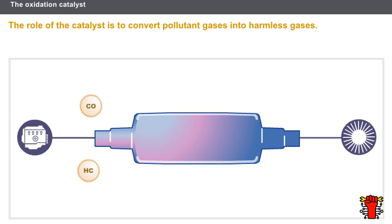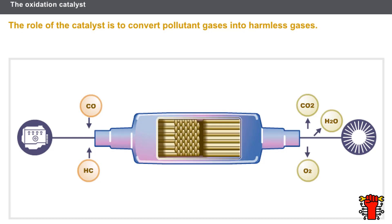The role of the catalyst is to convert pollutant gases into harmless gases. The catalyst contains precious metals that cause chemical reactions. The catalysts used on diesel engines treat carbon monoxide and unburnt elements and are called oxidation catalysts.